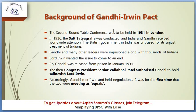Background of the Gandhi-Irwin Pact: The second Round Table Conference was to be held in 1931 in London. The 1930 Salt Satyagraha had given Gandhiji worldwide attention, and the British government was criticized for its unjust treatment of Indians. Gandhi and many other leaders were imprisoned along with thousands of Indians. Gandhi was released from prison in January 1931, and Congress President Sardar Vallabhbhai Patel authorized Gandhi to hold talks with Lord Irwin. It was the first time the two were meeting as equals.